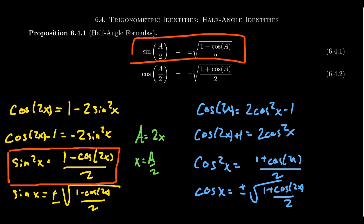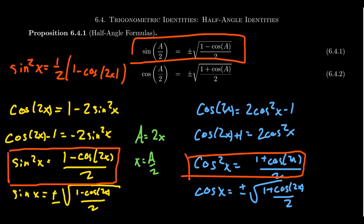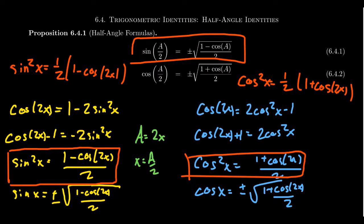Some of the intermediate steps are extremely useful in calculus. For example, sine squared of x equals one-half times (1 minus cosine of 2x). This identity is extremely useful in a calculus setting because it can turn a sine squared into a linear combination of cosine of 2x. Similarly, cosine squared of x equals one-half times (1 plus cosine of 2x). This version of the half-angle identity is used most often in calculus. By going through the proof, we learn many identities all at once.